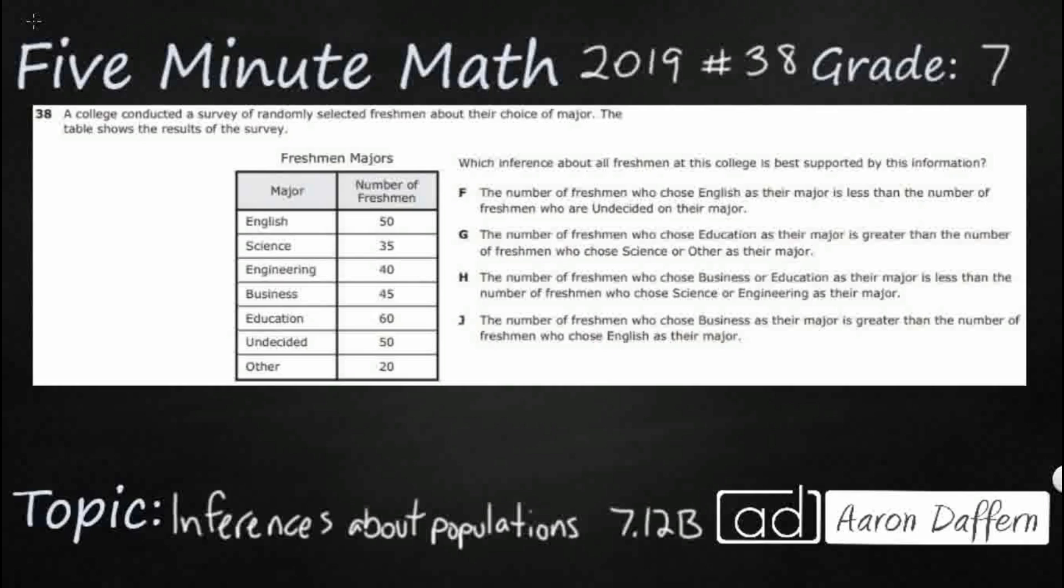So we have a survey here of randomly selected freshmen about the choice of major - English, science, engineering, so on and so forth. This is not a survey of every single freshman, just a randomly selected set. What we're going to do is make an inference about all freshmen based on this information. We can take a survey of a slice of a larger population and use those results as representative of everyone. We're not 100% sure unless we actually survey everyone, but we can make some pretty strong inferences.